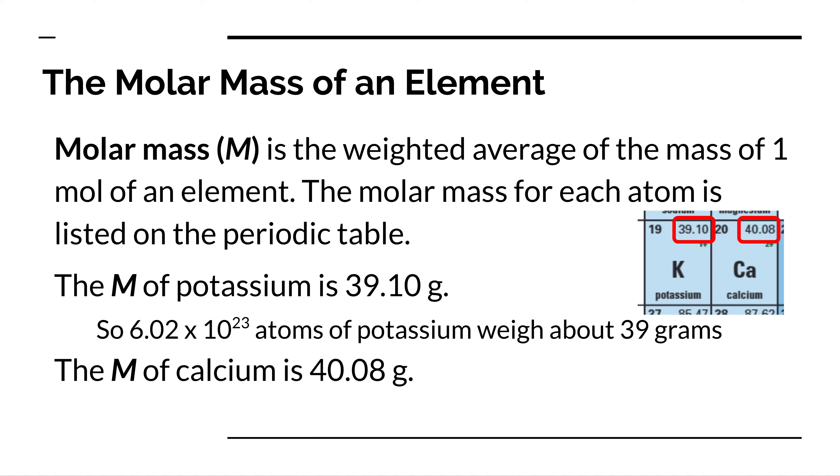So looking at potassium, the average mass of one mole of potassium is 39 and one-tenth of a gram. Now the way we'd express that as a molar mass is that potassium has a molar mass of 39.10 grams per mole, just like we would use kilometers per hour when measuring how fast a car is going.